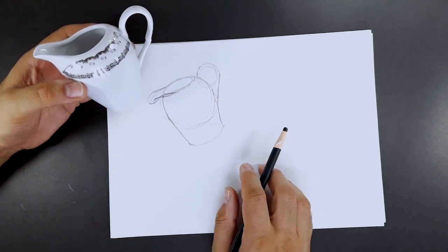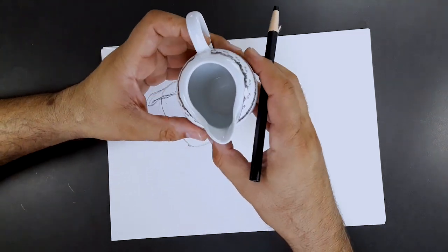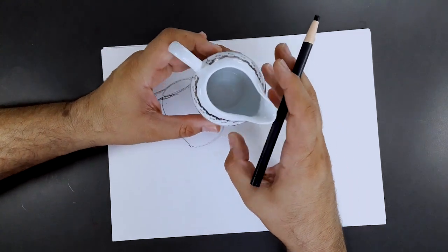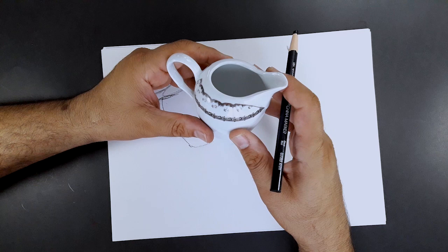Now, let's rotate the container again. Of course, from one point of view, we can draw a different form.